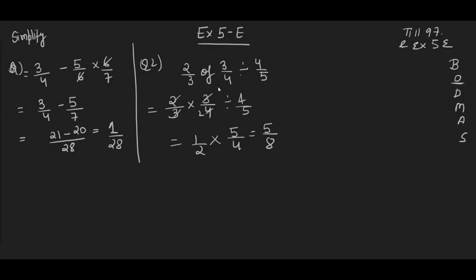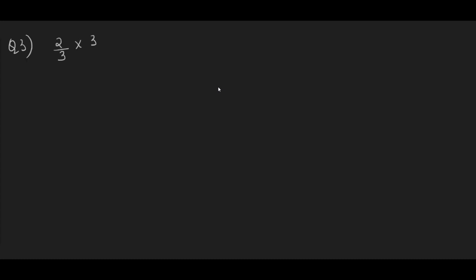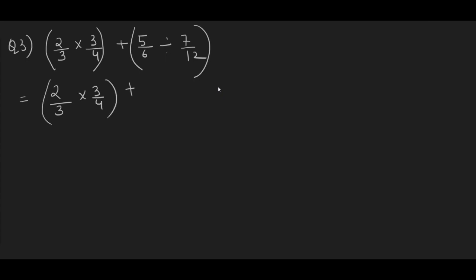Question number 3: 2/3 into 3/4 plus 5/6 divided by 7/12. These two parts are separated by addition. So you will solve each part first: 2/3 into 3/4, and 5/6 divided by 7/12. The division sign changes to multiplication, so 7/12 becomes 12/7. After cancellations, you get 1/2 plus 5 into 2 upon 7, which simplifies to 1/2 plus 10/7.